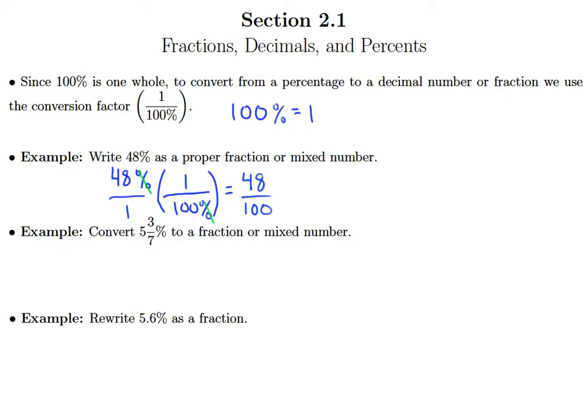Now, whenever we give a fraction answer, we're responsible for writing it in reduced form. So we recognize that the greatest common factor of 48 and 100 is 4, and dividing top and bottom by 4 gives us 12/25.